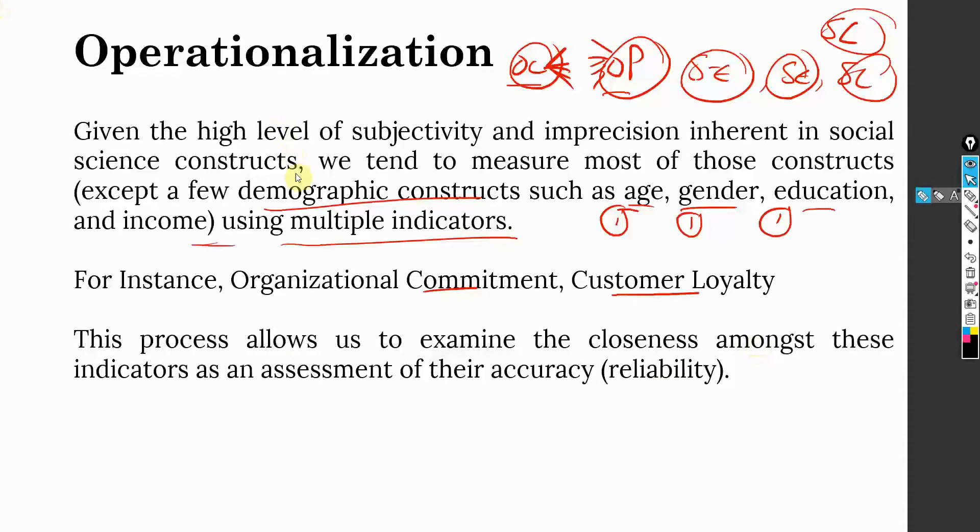The process allows us to examine the closeness amongst these indicators as an assessment of their accuracy. This process of operationalization helps you examine the closeness amongst these indicators, how well these indicators are related with each other. Their item to total correlation. The closer they are, the higher is their reliability. Obviously, this will be part of your analysis later.